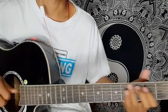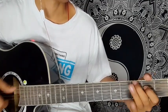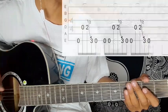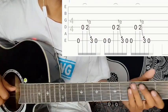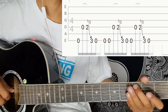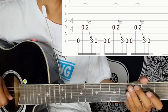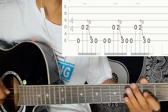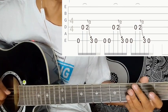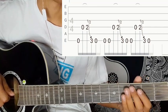Fourth string open, then hammer-on to second fret. Do the bending, then third string open. Repeat this sequence.